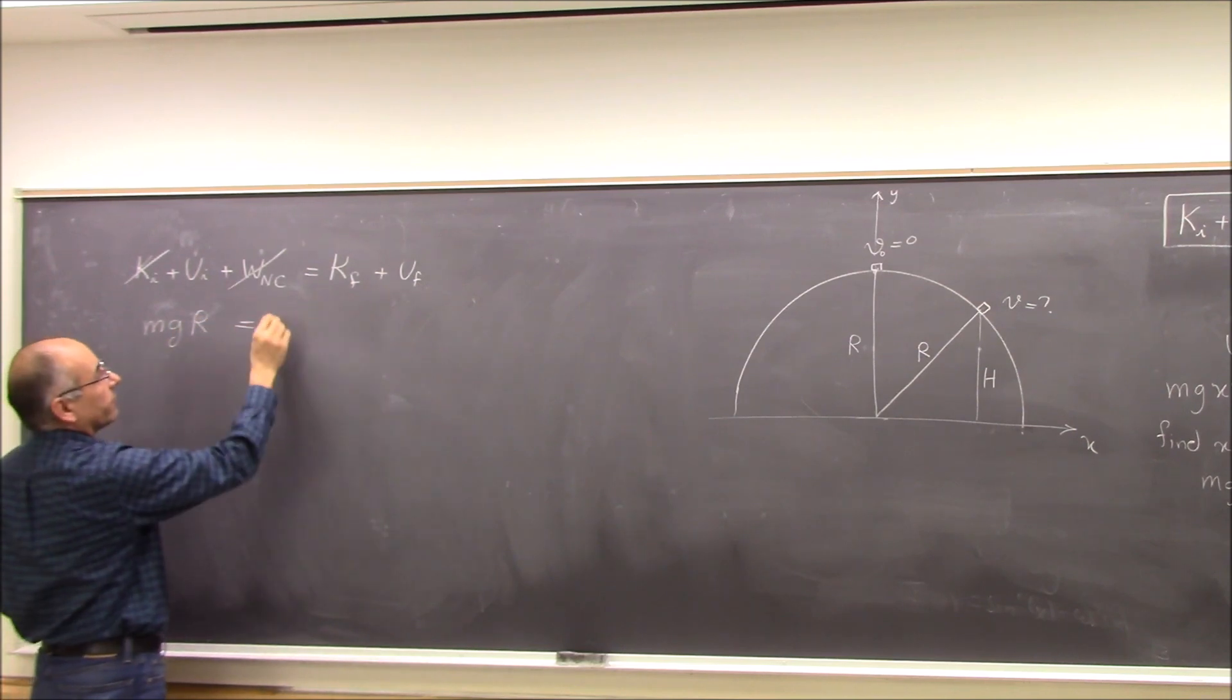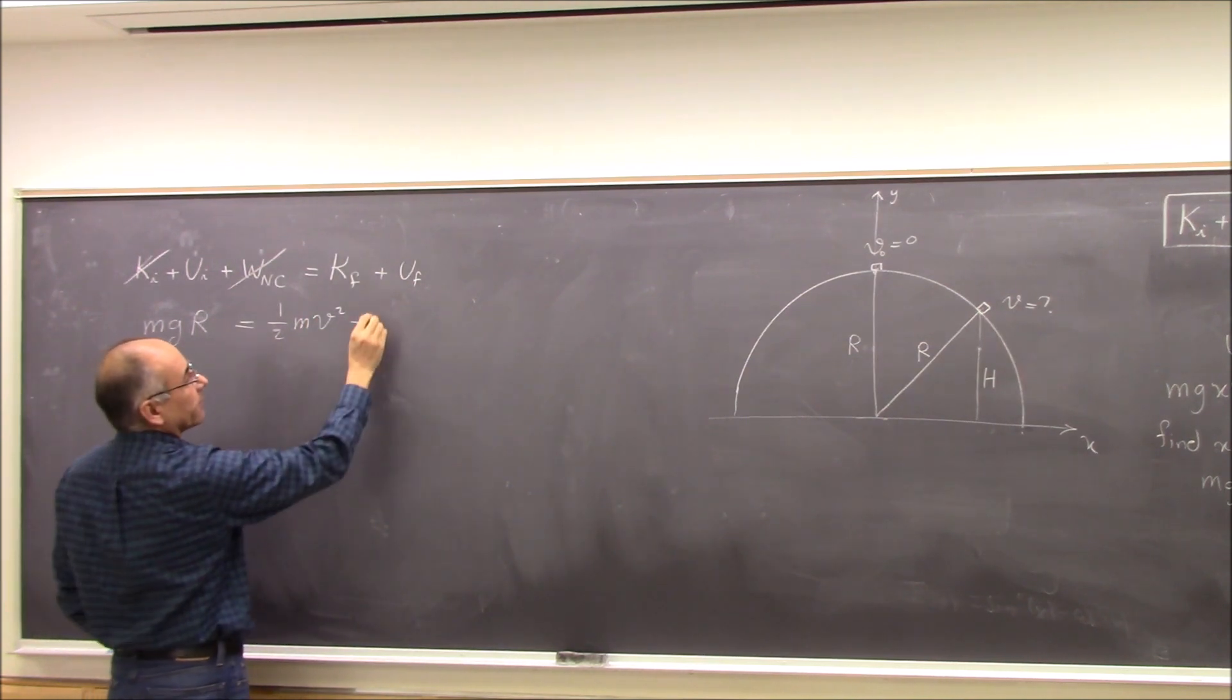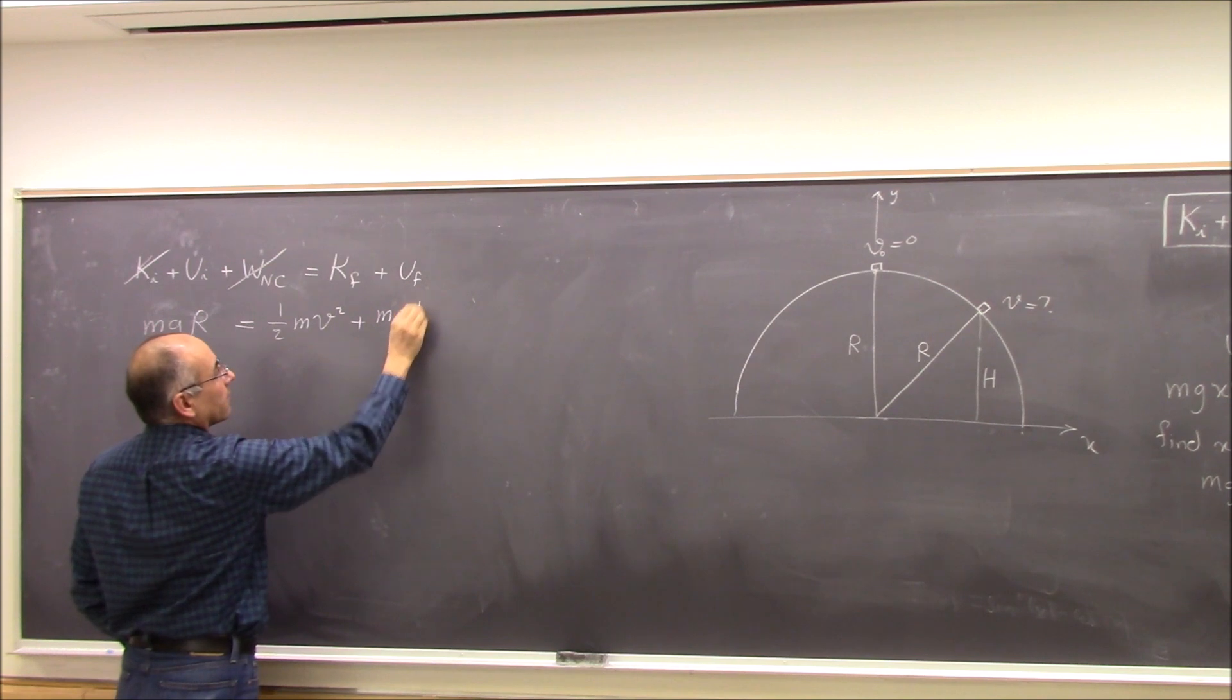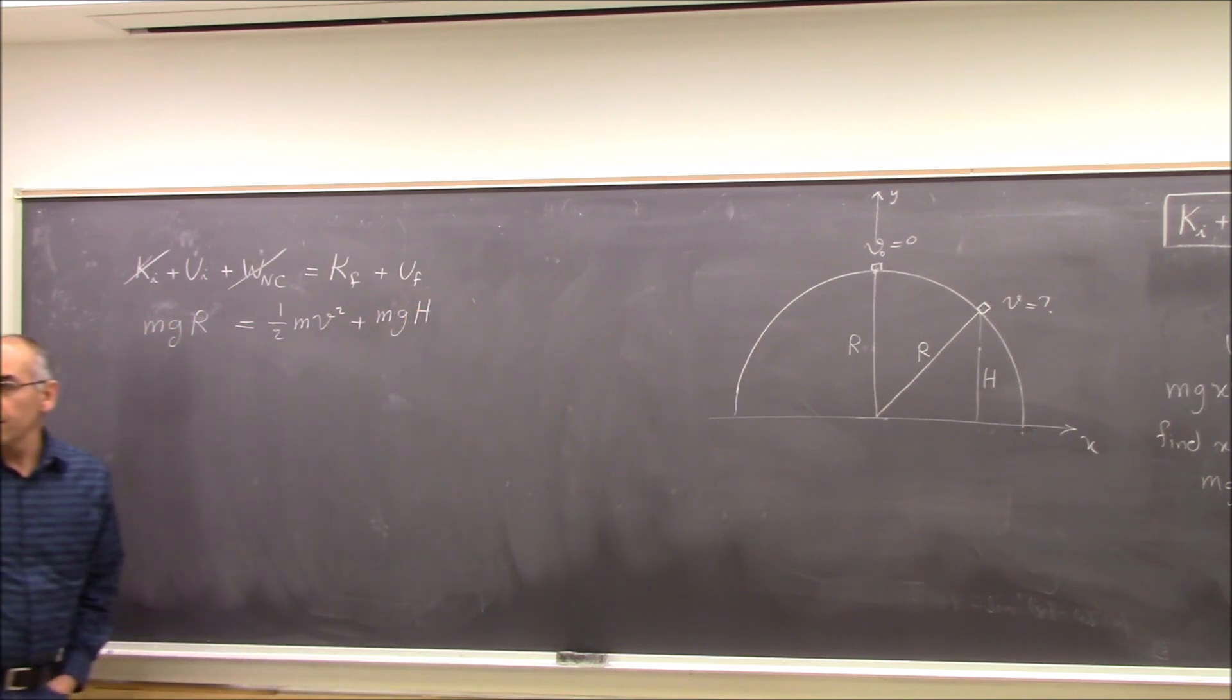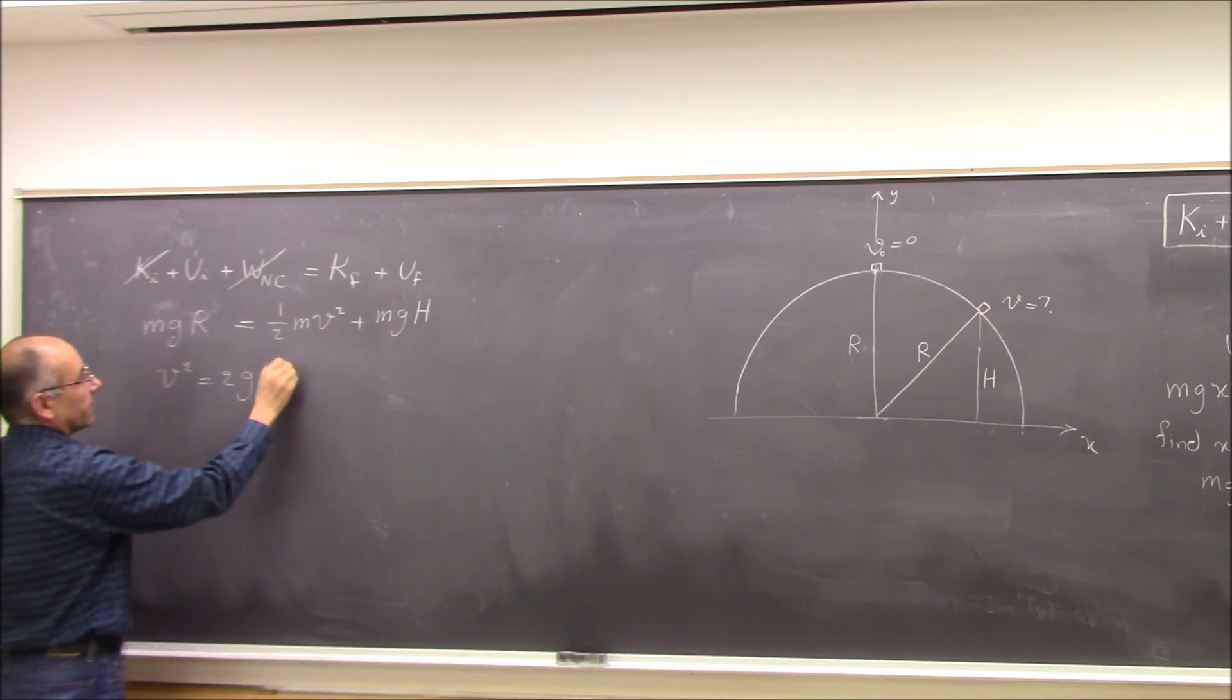Equals Kf, one-half Mv squared, plus Uf, which is Mgh. That's conservation of energy. And M cancels out. I can find V squared to be 2g times R minus H. Right?